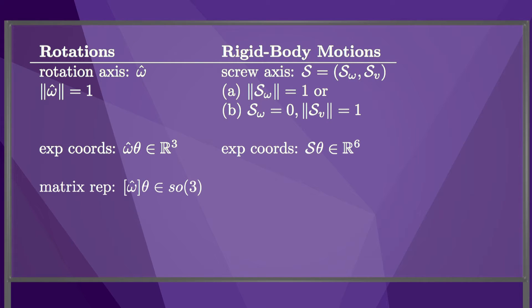For rotations, the matrix representation of the exponential coordinates is the 3 by 3 skew symmetric representation of omega hat times theta. The set of all such matrices is called little so(3). For rigid body motions, the matrix representation of the exponential coordinates is a 4 by 4 matrix in little se(3), which we learned about in the last video.